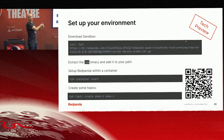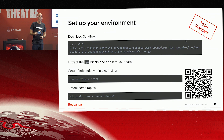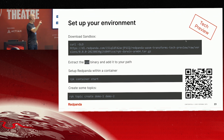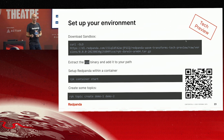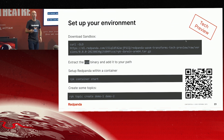First, we download the sandbox by curling that — that gives us the RPK command line utility, which is simple and doesn't have a million different flags. Then we run RPK container start. It is that easy to get Red Panda up and running — no worrying about Zookeeper or any of that. We're up and running. Then I create two topics: RPK topic create demo-one, demo-two. Topics created.